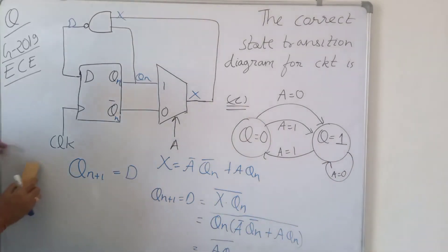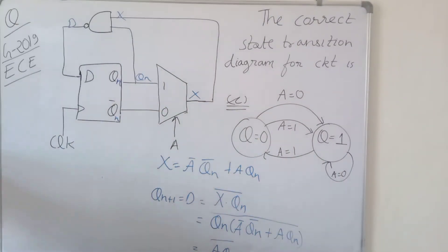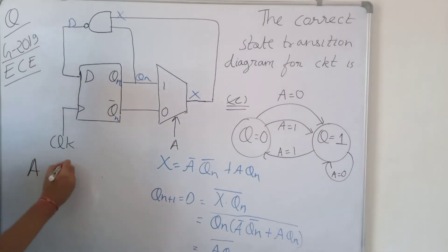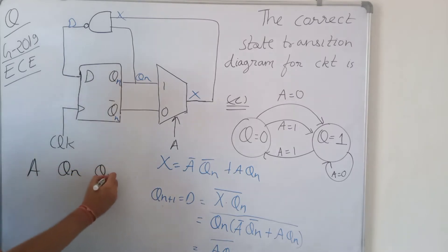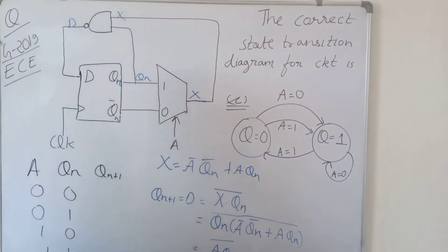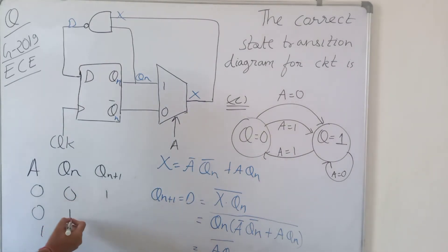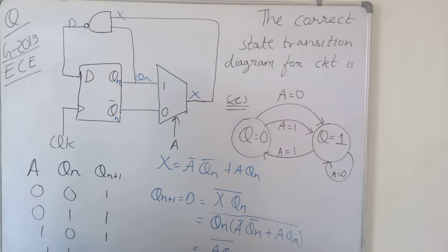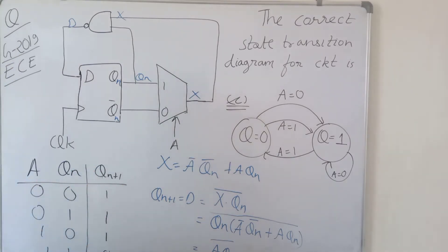We now build the state table with Qn+1 = a·Qn̄. For the NAND gate: when both inputs are 0 the output is 1; when one input is 0 the output is 1; and when both inputs are 1 the output is 0.